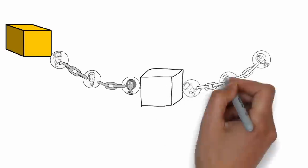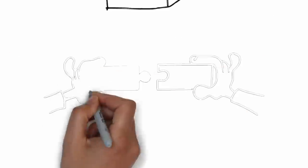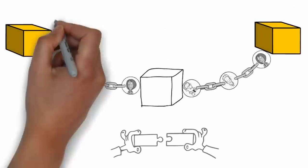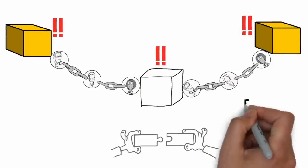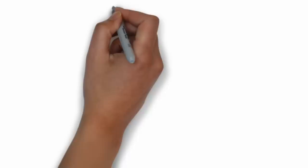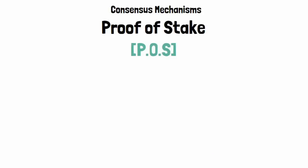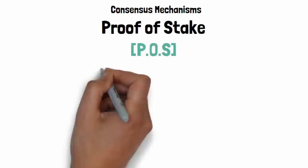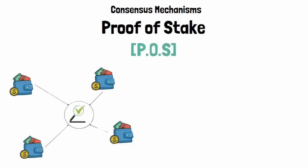This decentralized nature makes blockchain highly transparent, secure, and immutable. Each block in a blockchain contains a unique code linking it to the previous one, and if someone tries to tamper with a block, that link breaks immediately, alerting the entire network. In TON, consensus mechanisms like proof of stake are used to keep the system in check, allowing validators to vote with their coins to ensure agreement on transactions.